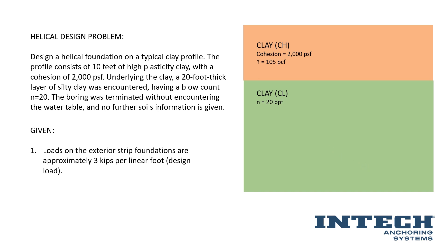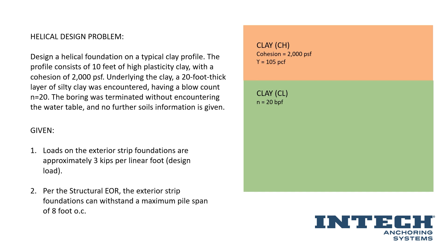Loads on the exterior strip foundations are approximately 3 kips per linear foot design load. We're going to presume this is a compression load only for this example, and we're only going to go through the design for an exterior strip foundation. Per the structural engineer of record, the exterior strip foundations can withstand a maximum pile spacing on center of eight feet. This is a typical rule of thumb — eight foot maximum spans on a strip foundation is pretty typical. If you go wider, you're going to have more load per helical pile; if you go closer together, you're going to have less load per helical pile.